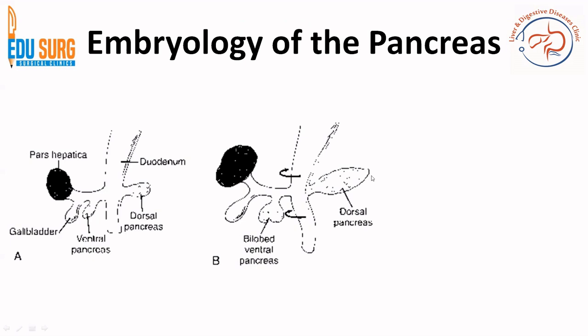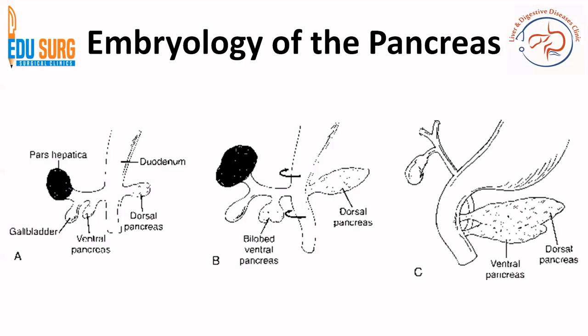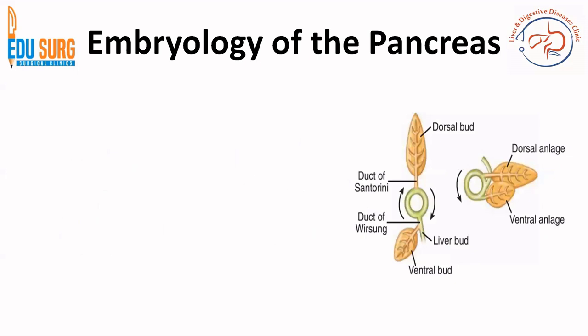The dorsal pancreas keeps growing towards the left, whereas the ventral pancreas needs to complete a significant rotation. The ventral pancreas has two parts — right and left. The right one usually stays whereas the left part regresses. Finally, the ventral pancreas goes behind the duodenum and joins with the dorsal pancreas from behind. This rotation is from right to left and posteriorly. You can also see the development of pars hepatica and the biliary system going along with it — everything rotates behind the duodenum for its fusion with the dorsal pancreas.